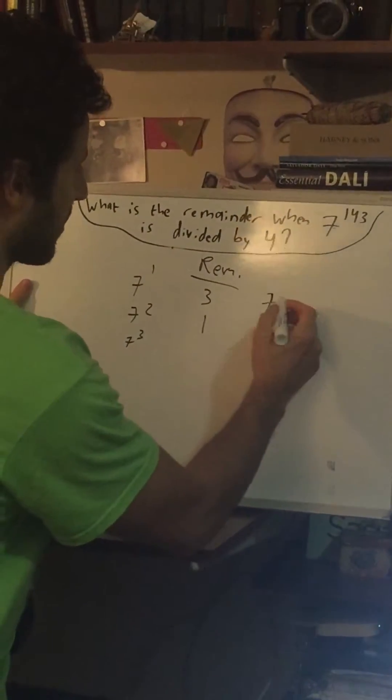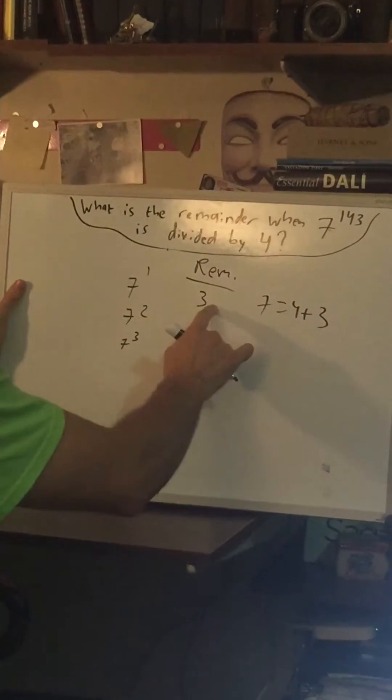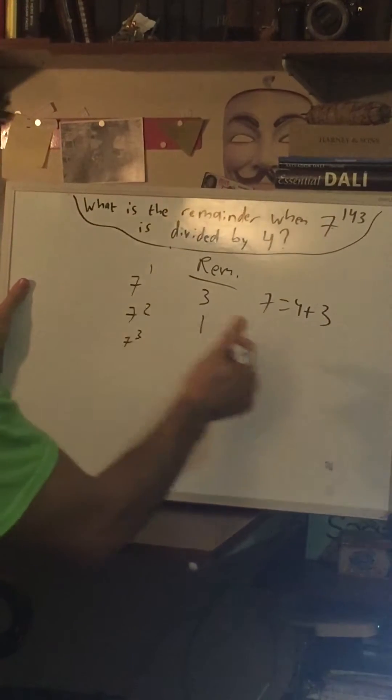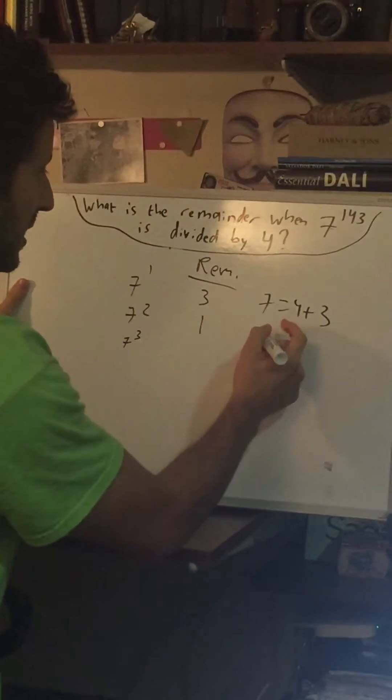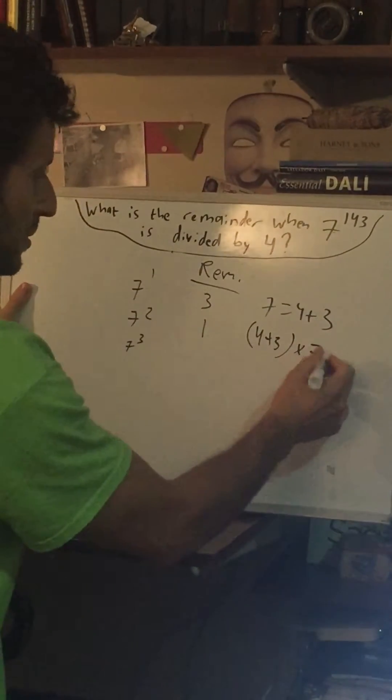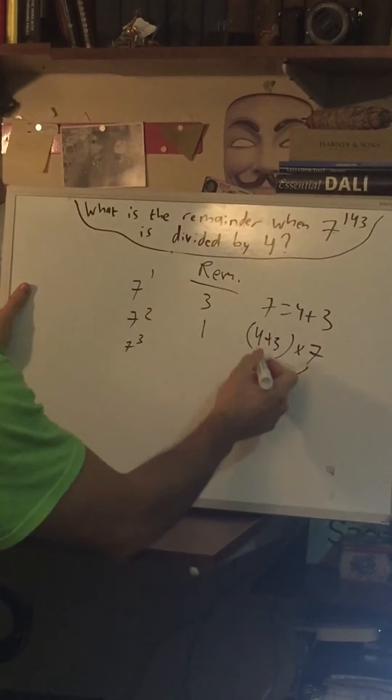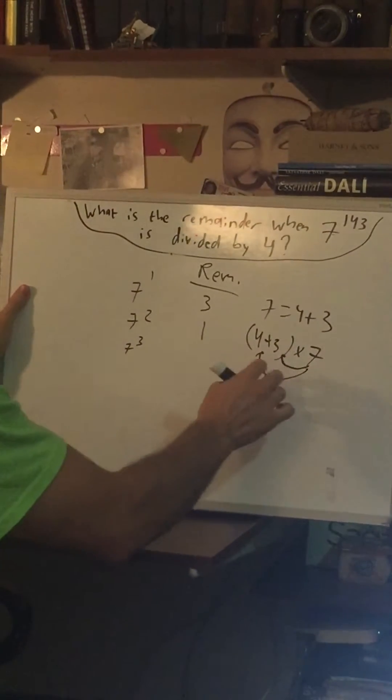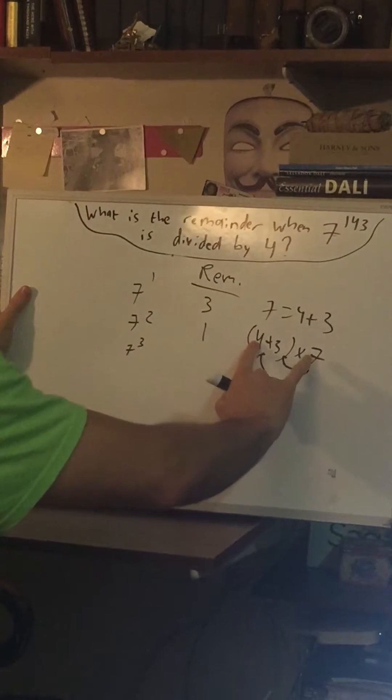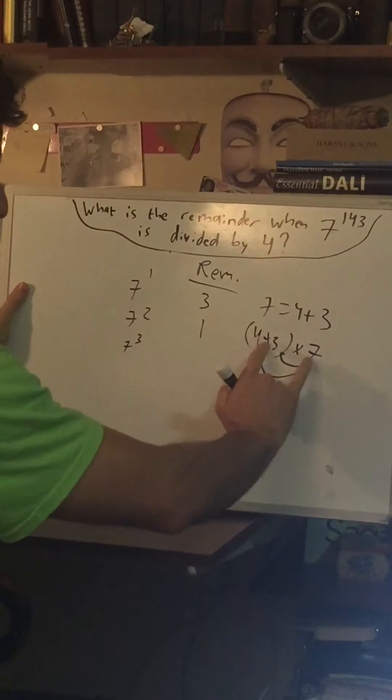7 can be thought of as 4 plus 3. That's where the remainder of 3 came from. So when we square 7 rather than actually calculate the 49, we could think of this as 4 plus 3 times another 7. So this 7 will apply to both the 4 and the 3. Now this already has a 4 so when you multiply it by 7, that will still be divisible by 4 so we can ignore this part. But we can't ignore this part.